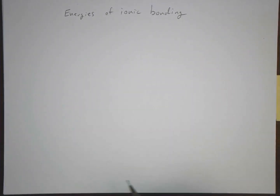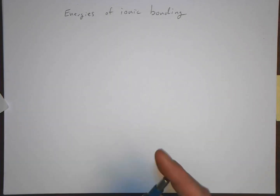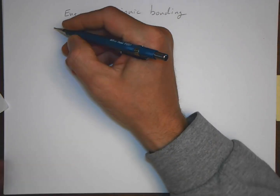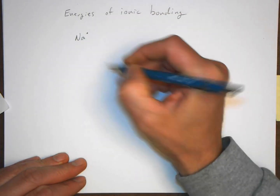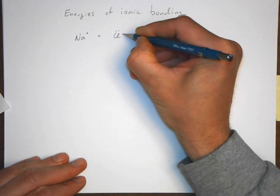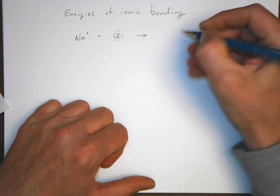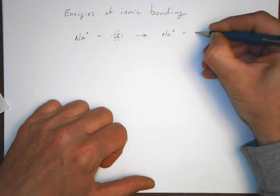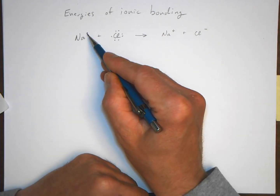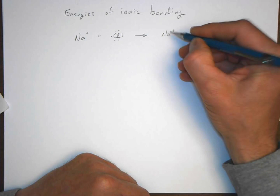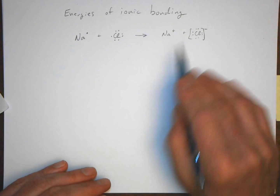We're going to look at the energies involved in ionic bonding. We have our sodium atom and our chlorine atom — I'm using Lewis dot structures to illustrate the number of electrons around them. What's going to happen is we're going to have the sodium ion and a chlorine anion, so we're taking this electron and putting it onto the chlorine.